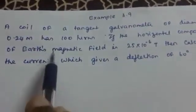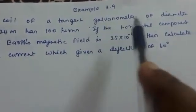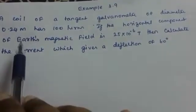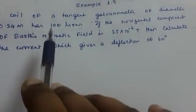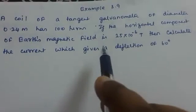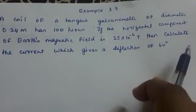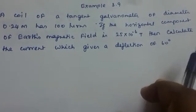Example 3.9: A coil of a tangent galvanometer of diameter 0.24 meter has 100 turns. If the horizontal component of Earth's magnetic field is 25 into 10 raised to minus 6 tesla, then calculate the current which gives a deflection of 60 degrees.